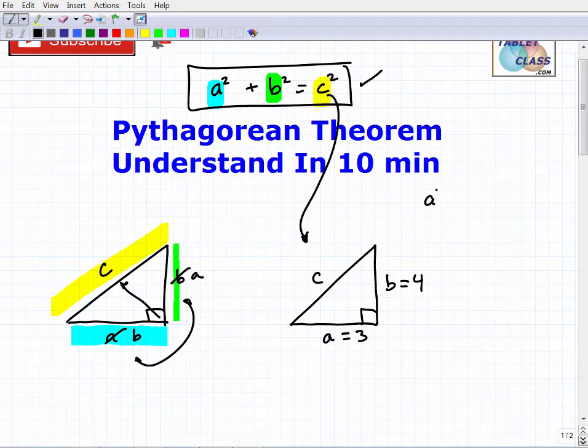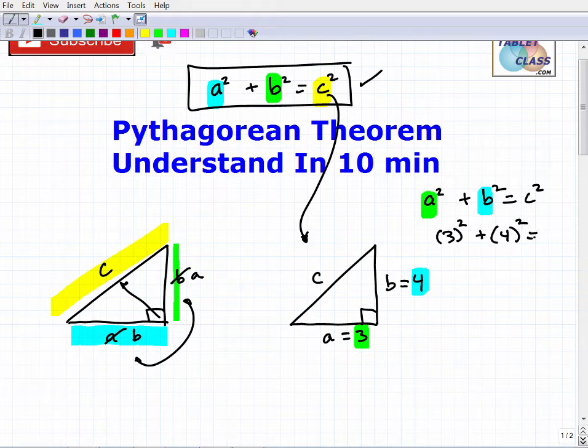Let's apply the Pythagorean Theorem and see how this works. Very simple. So it's going to be A squared plus B squared is equal to C squared. A is 3, so we're going to plug in 3 there. B is 4, so we're going to plug in a 4 there. So A is 3 squared plus B is 4 squared, and that is equal to C squared.